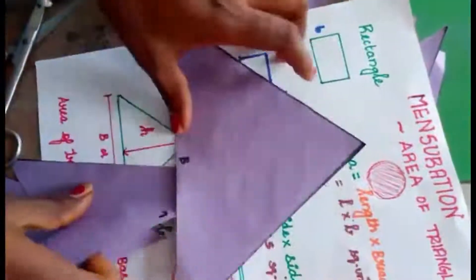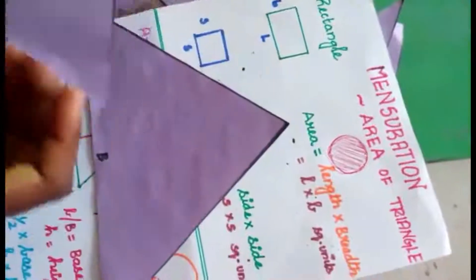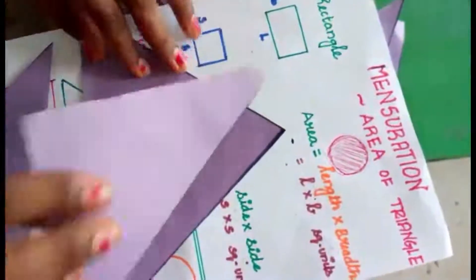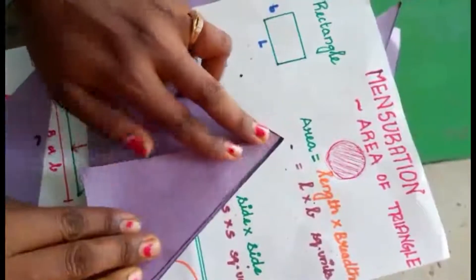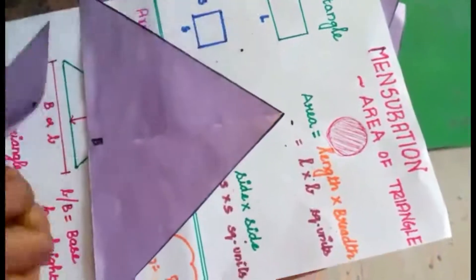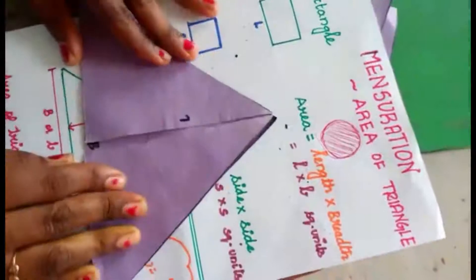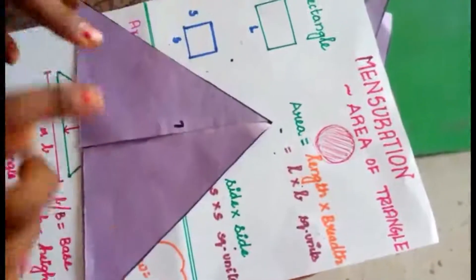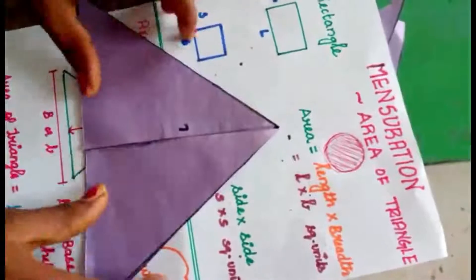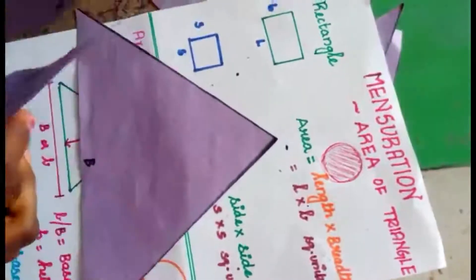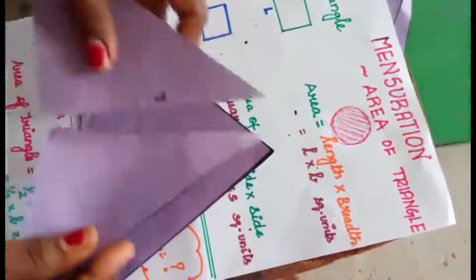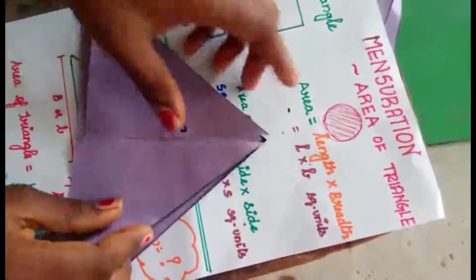Now cut this triangular part. I have cut this triangular part. The remaining two pieces — try to fit these two pieces inside this triangle. Now you can see I have placed these two pieces inside the triangle. So from one rectangular sheet of paper, we have obtained two triangles.